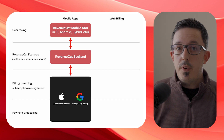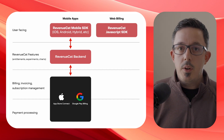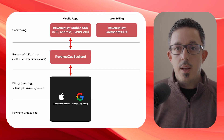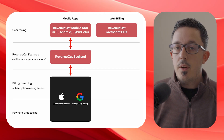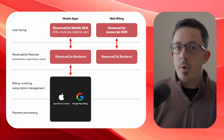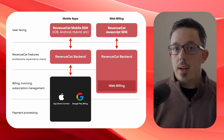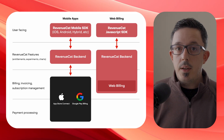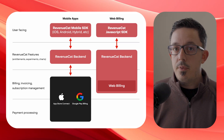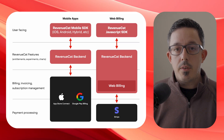Web billing works very similarly. We have a JavaScript SDK you can embed in your website to facilitate transactions, and the SDK talks to the same RevenueCat backend. Instead of purchases running through the mobile stores, however, RevenueCat's backend manages the billing, invoicing, and user subscription management itself, and then uses a payment processor for credit card transactions.